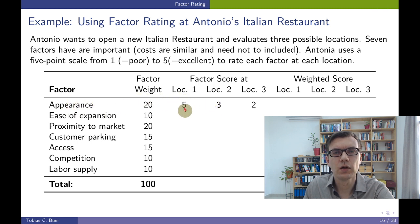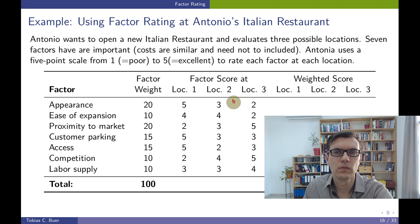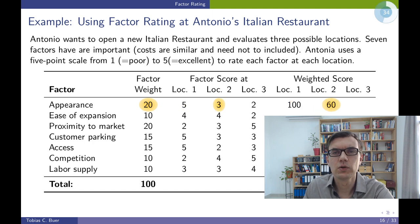The appearance at location one is really great, however the appearance at location three is mediocre — not very good. This evaluation is repeated for all other factors using the same point scale. To calculate the weighted score for location one on appearance, we multiply the weight of this factor, 20, by the score of location one, 5 — so 5 times 20 is 100. For location two: 3 times 20 is 60. For location three: 2 times 20 is 40. We repeat this for all other factors.